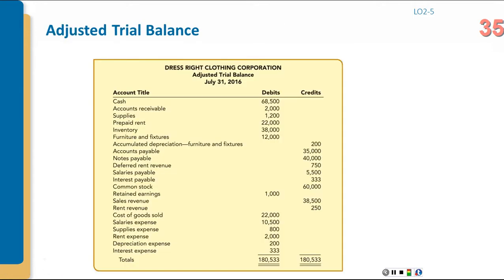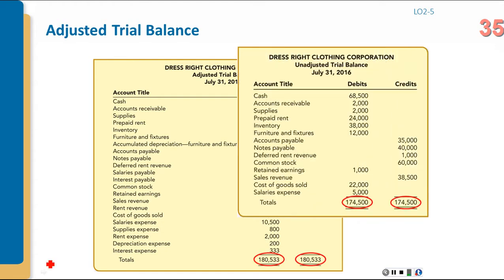After completing the adjusting entries, you prepare the adjusted trial balance. You take the balances from the unadjusted trial balance and incorporate the adjusting entries — some are additions and some are subtractions — updating only the affected accounts. The result is step seven: the adjusted trial balance, showing the unadjusted trial balance overlaid with the adjusted figures, demonstrating where the numbers changed.